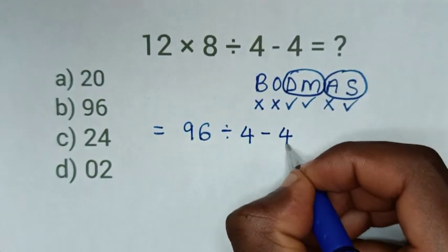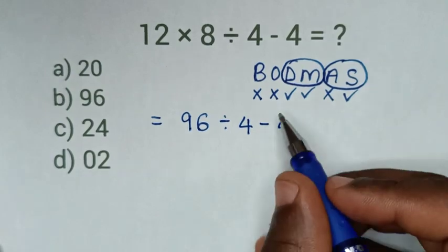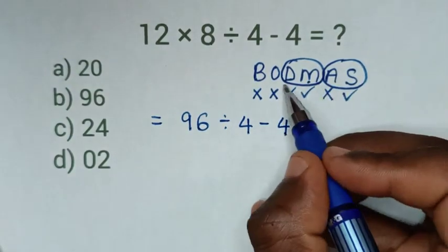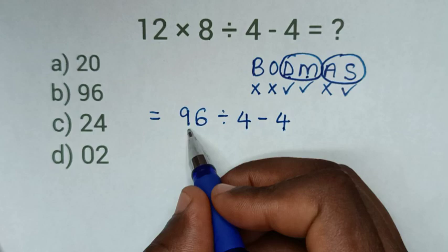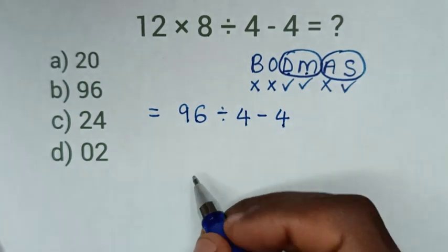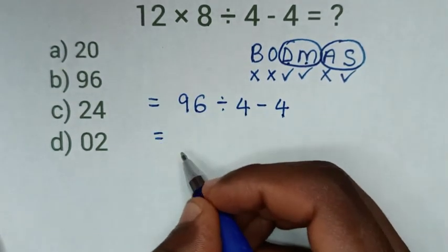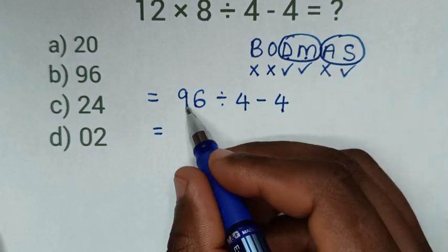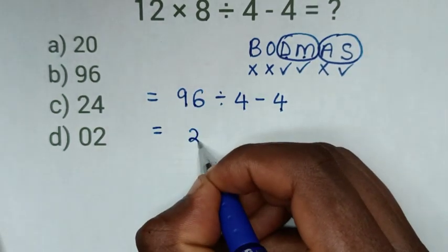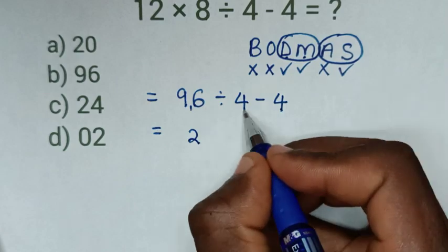After we have dealt with this multiplication, then we do the division of 96 divided by 4. So it will be equal to, 9 divided by 4 is 2 by 8, so it will remain 1. 16 divided by 4 is 4.